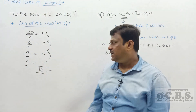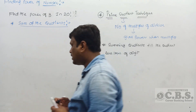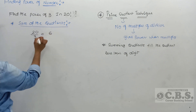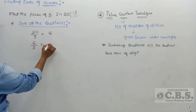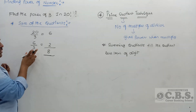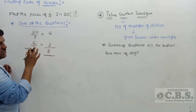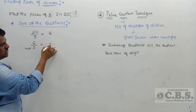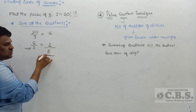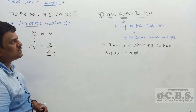Next, find the power of 3 in 20!. 20 ÷ 3 = quotient 6; 6 ÷ 3 = quotient 2. Since 2 is less than 3, we stop. Summing: 6 + 2 = 8. So the power of 3 in 20! is 8.